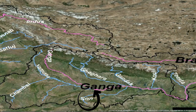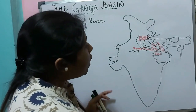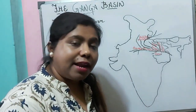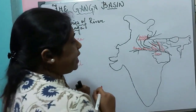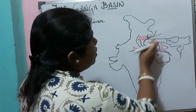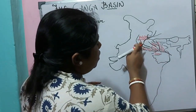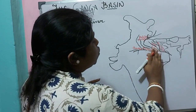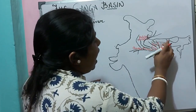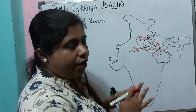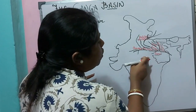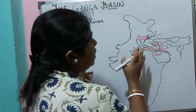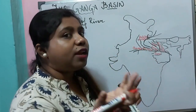Many of these tributaries join river Ganga after passing through the region. River Ganga, after reaching Haridwar, flows through Delhi, then Uttar Pradesh, and then reaches Bihar, where the tributary Son meets the river Ganga near Patna.